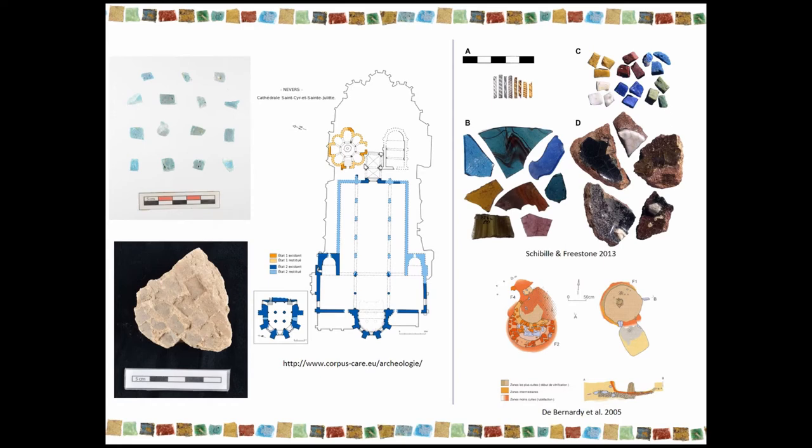These tesserae are mainly discovered in two types of sites, mainly places linked to early churches and to the elites, and also in palaces, and then, as we've seen previously, found in workshops where they were meant to be remelted and transformed into other objects.